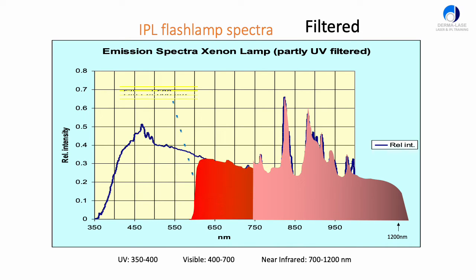We don't necessarily want all that energy when we're treating targets in the skin, so with an IPL we'll put in a filter, maybe something like this at 600 nanometers. That'll block all the light energy below 600 nanometers and only allow through the red and near-infrared energy between 600 and about 1200. In this way we can target specific chromophores in the skin — for example melanin — and using red and infrared light, we can target those quite safely without damaging hemoglobin in the blood vessels.